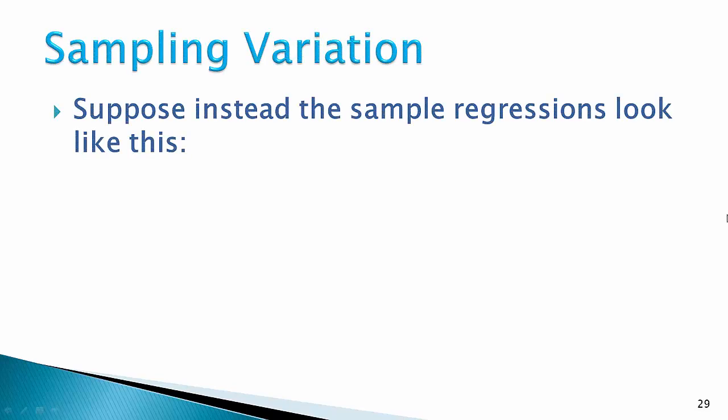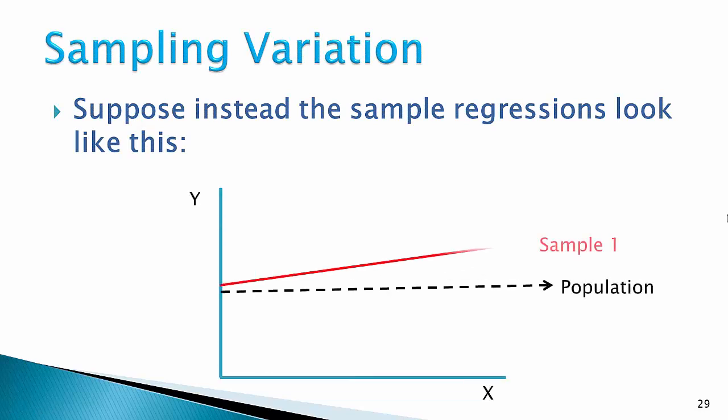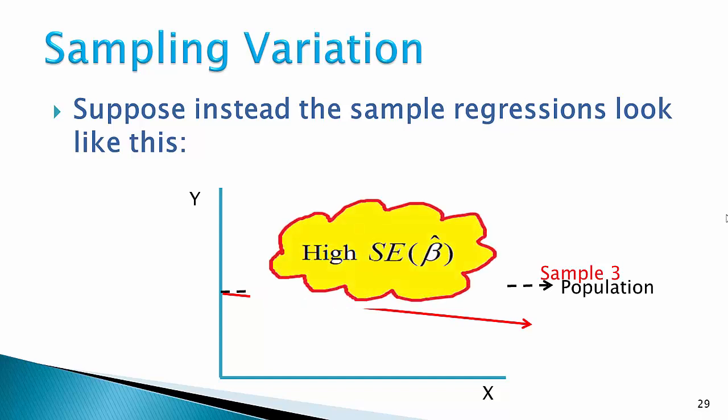Now suppose instead the sample regressions look like this. You can see that in this case, the sample regressions are not similar at all. There is a high level of sampling variation and the beta hat estimates differ markedly from one sample to the other. So there is a high standard error for beta hat in this case.